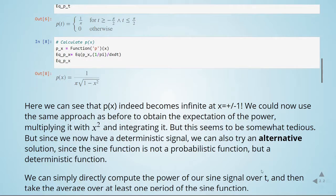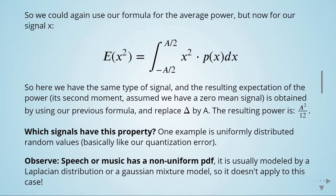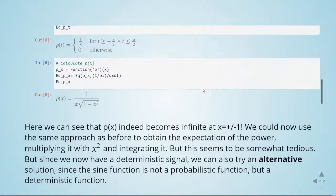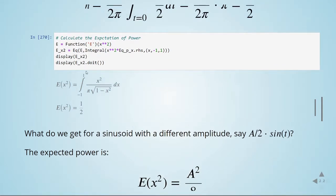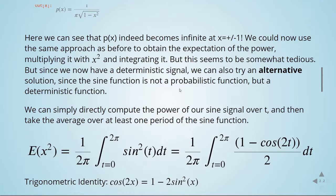Now that we have the PDF of the sine wave, we can go back to the formula for the average power. The sine wave goes from minus one to one, and we replace the PDF times x squared to obtain the expectation of the signal power. Computing this integral, we find that the expectation of the signal power of a sine wave is 1 divided by 2, or 0.5.